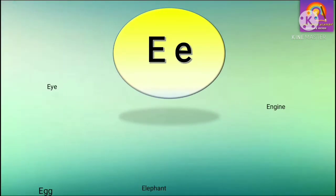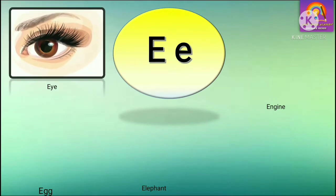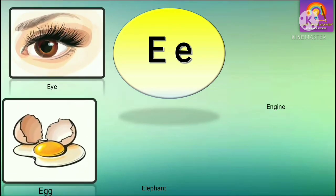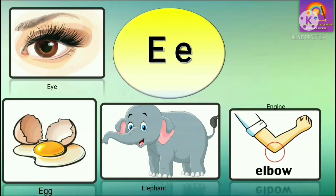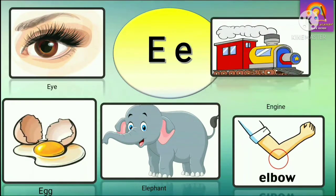E. E for eye, E for egg, E for elephant, E for elbow, E for engine.